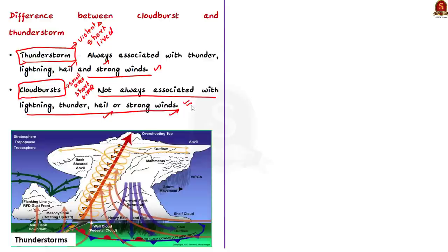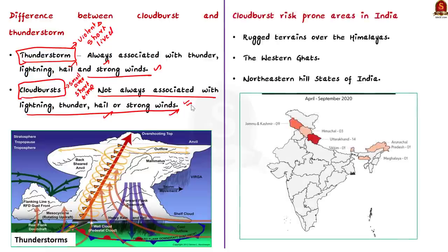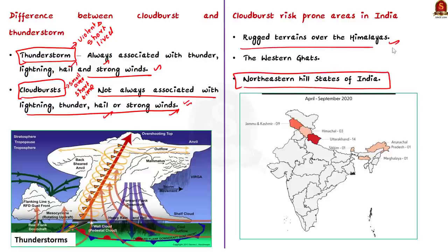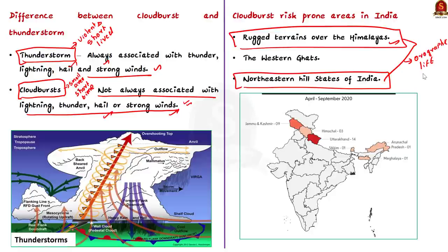Now let us see the areas in India that are prone to cloudburst. The Himalayas and the northeastern hills are most prone to cloudburst because orographic lift normally happens in these areas, triggering cloudbursts. This map shows the occurrence of cloudburst between April and September 2022. If you notice, most of the cloudbursts happened in the Himalayan states and the northeastern region.